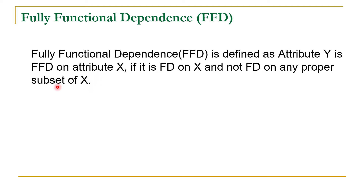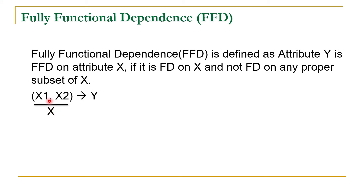In order to explain this concept, let us consider this example. Here we are talking about the relation R having three attributes X1, X2, and Y, and we have to decide that Y is fully functional dependent on X or not. In this case, X is a composite attribute which is a combination of X1 and X2.